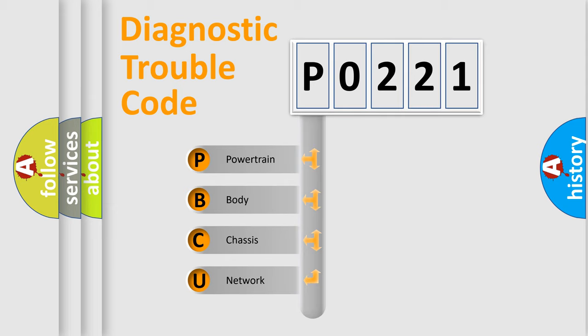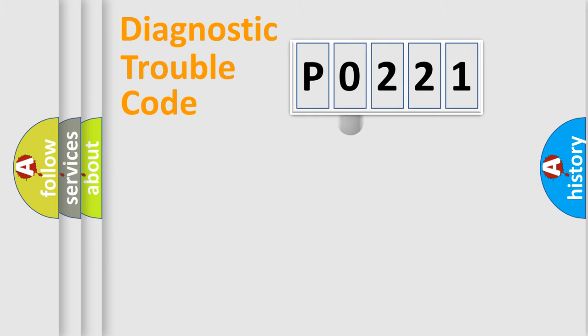We divide the electric system of automobile into four basic units: Powertrain, Body, Chassis, and Network. This distribution is defined in the first character code.